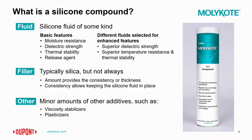Then there's the filler, which is typically a silica, though it doesn't always have to be. This is the part of the compound that provides consistency and thickness — its main job is to hold that fluid in place. Using less filler may result in increased bleed-out from the silicone fluid, and using too much can change the compound's character entirely. There are also additives, usually a very small amount, to help with stabilizing viscosity or changing the overall feel and structure of the compound.